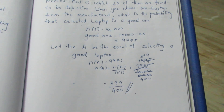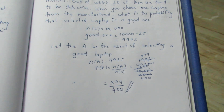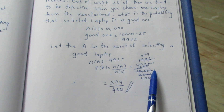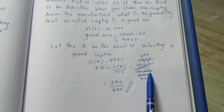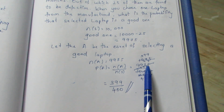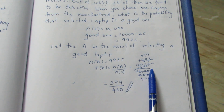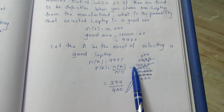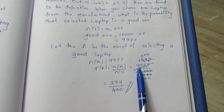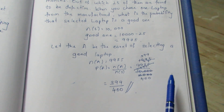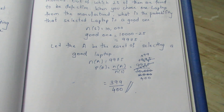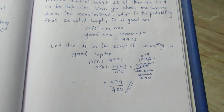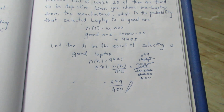So the final answer is 399 by 400. In decimal form, that is 0.9975. You have to put it as a fraction — the answer is 399/400. Thank you.